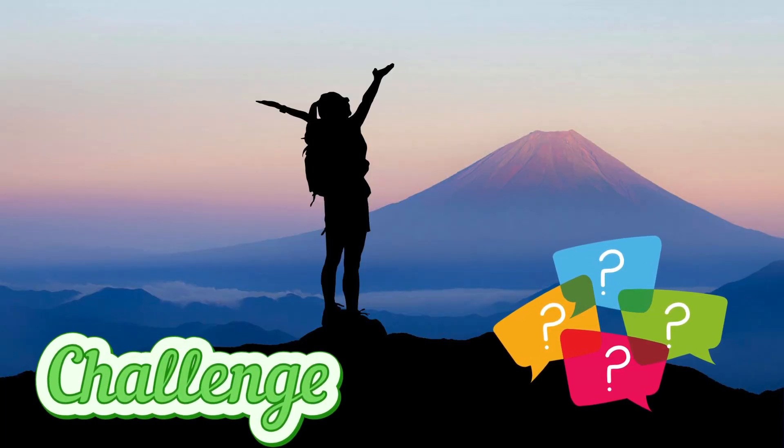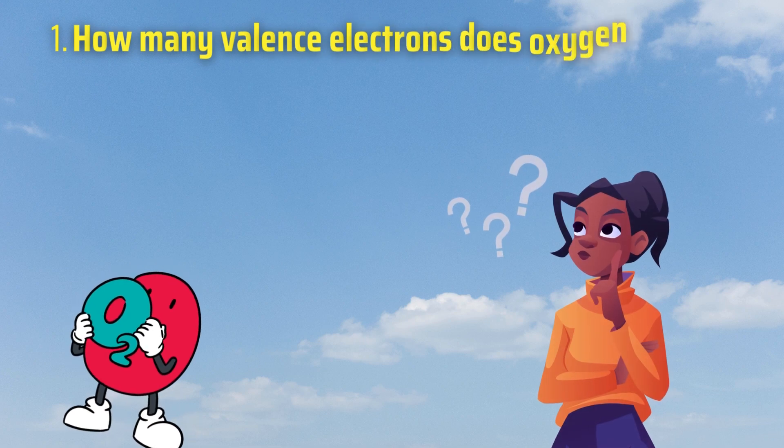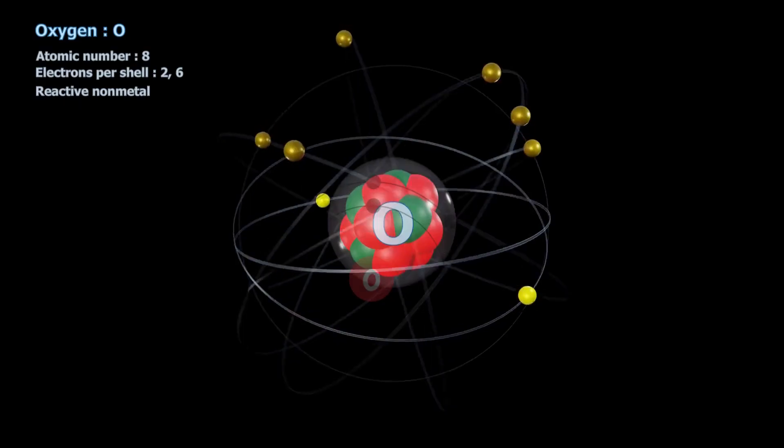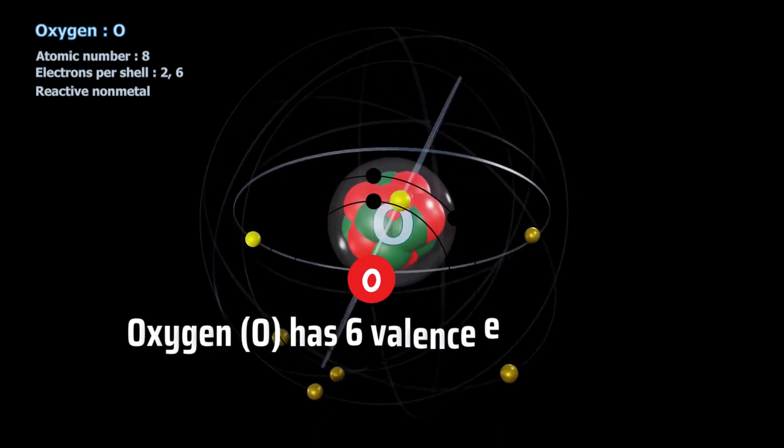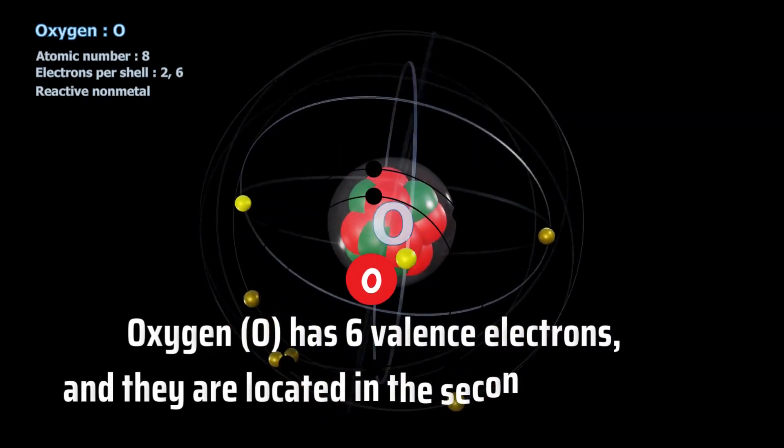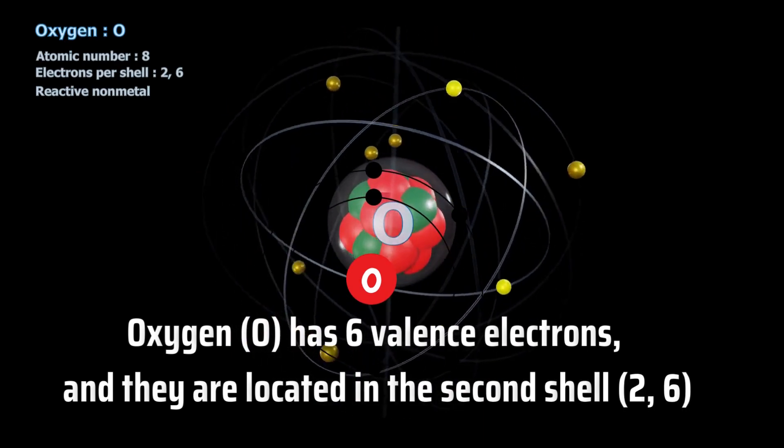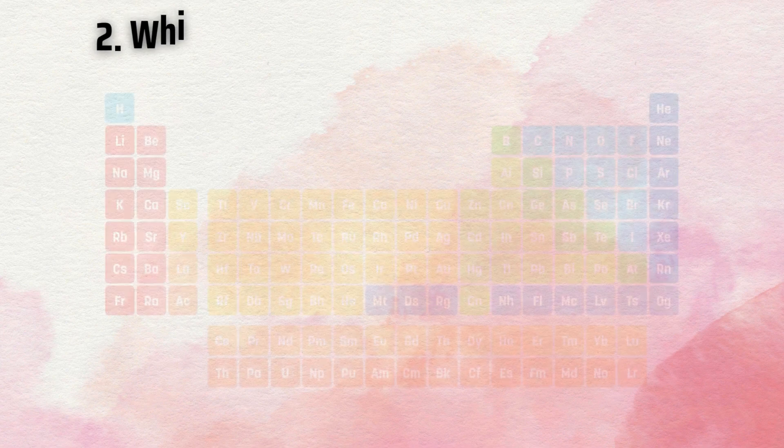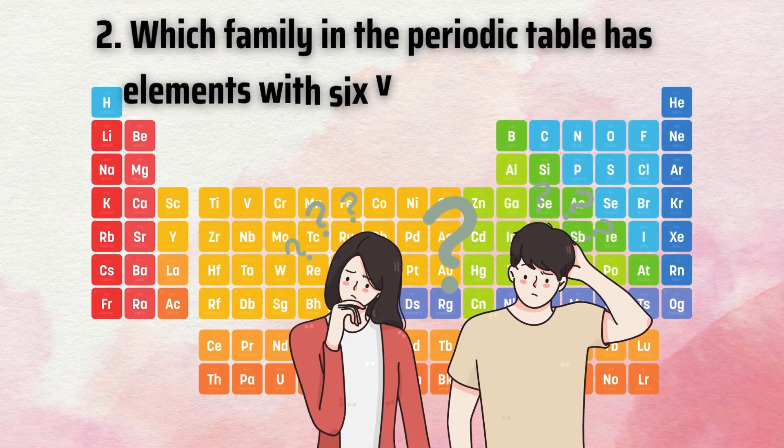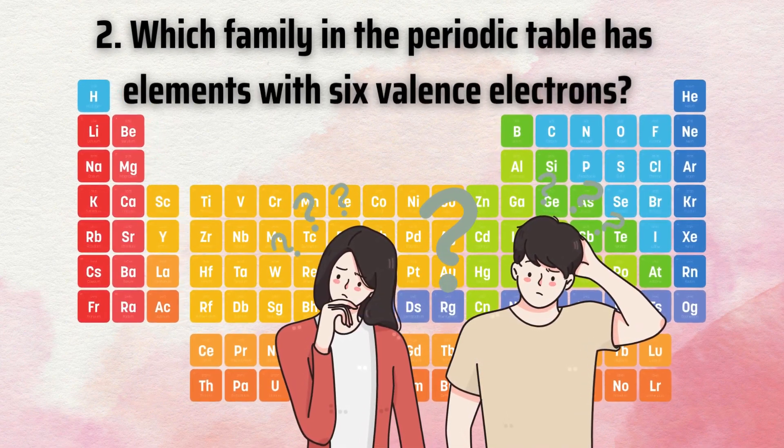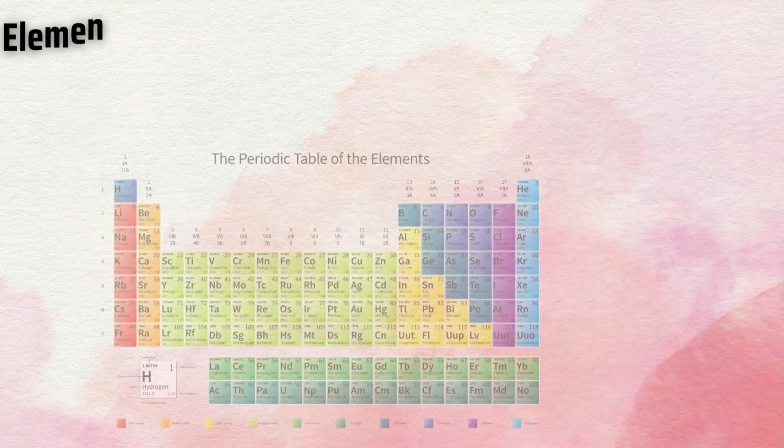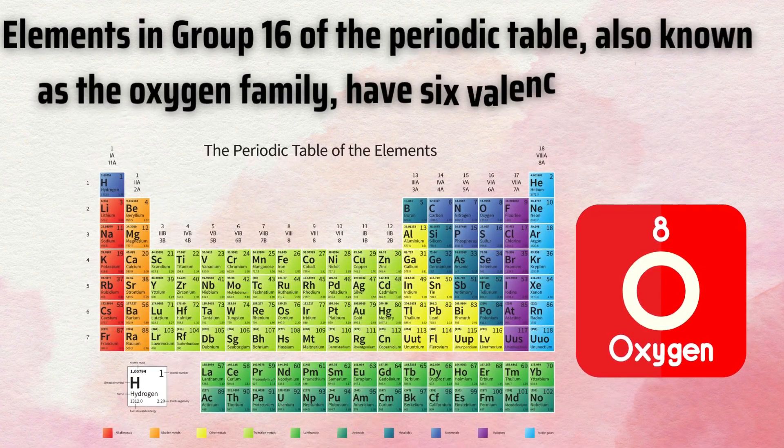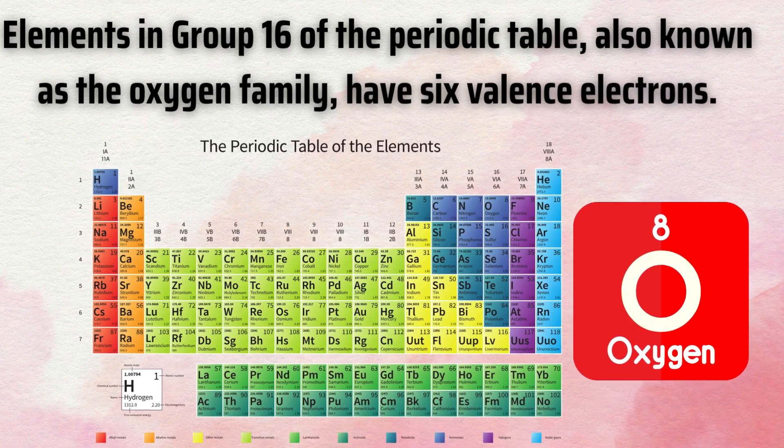Challenge questions. Question 1. How many valence electrons does oxygen have and in which shell are they located? Oxygen has 6 valence electrons and they are located in the second shell. So oxygen's configuration is 2 comma 6. Question 2. Which family in the periodic table has elements with 6 valence electrons? Elements in family 16 of the periodic table, also known as the oxygen family, have 6 valence electrons.